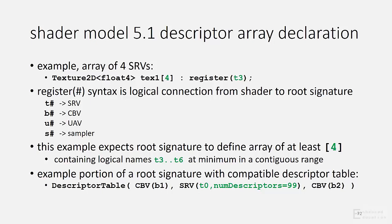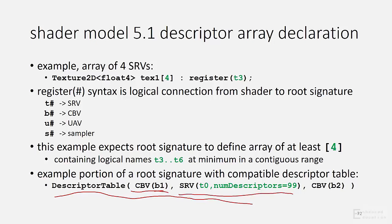This example illustrates one way to do that. Here's a descriptor table declaration that includes three descriptor ranges. It starts with a constant buffer view range of size 1 that fills in HLSL register B1, followed by 99 SRV descriptors in a range, and ended by another constant buffer view range of size 1 mapping to B2. Since the SRV range starts at T0, the names T0 through T98 are represented in this descriptor table, which is more than enough for what the array requires.